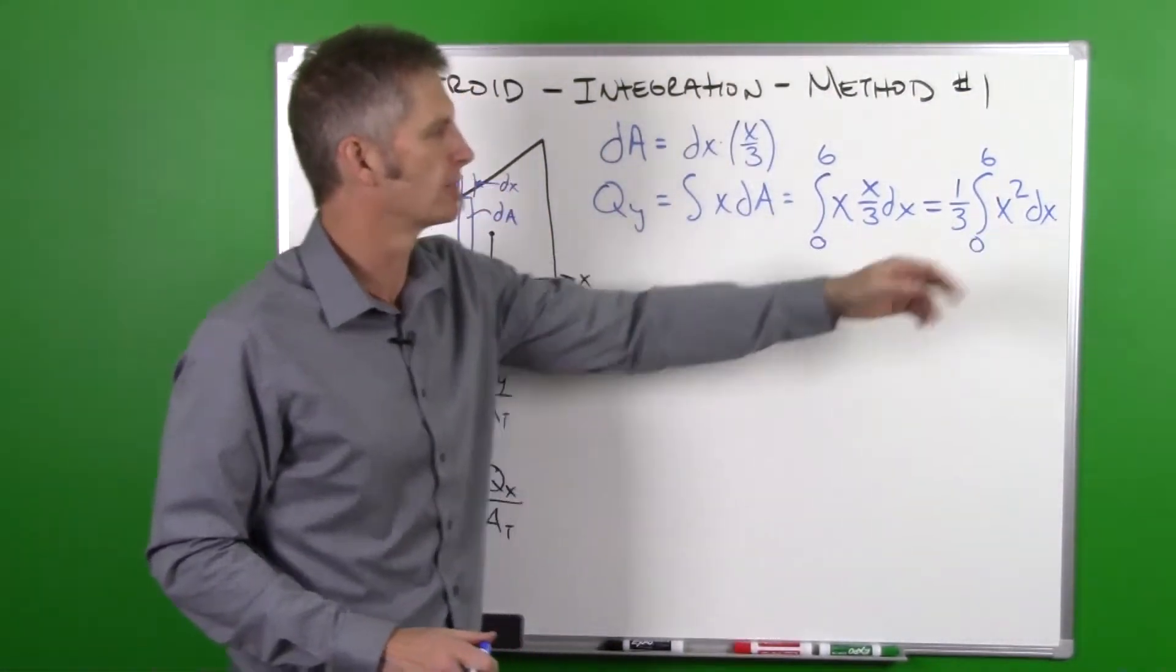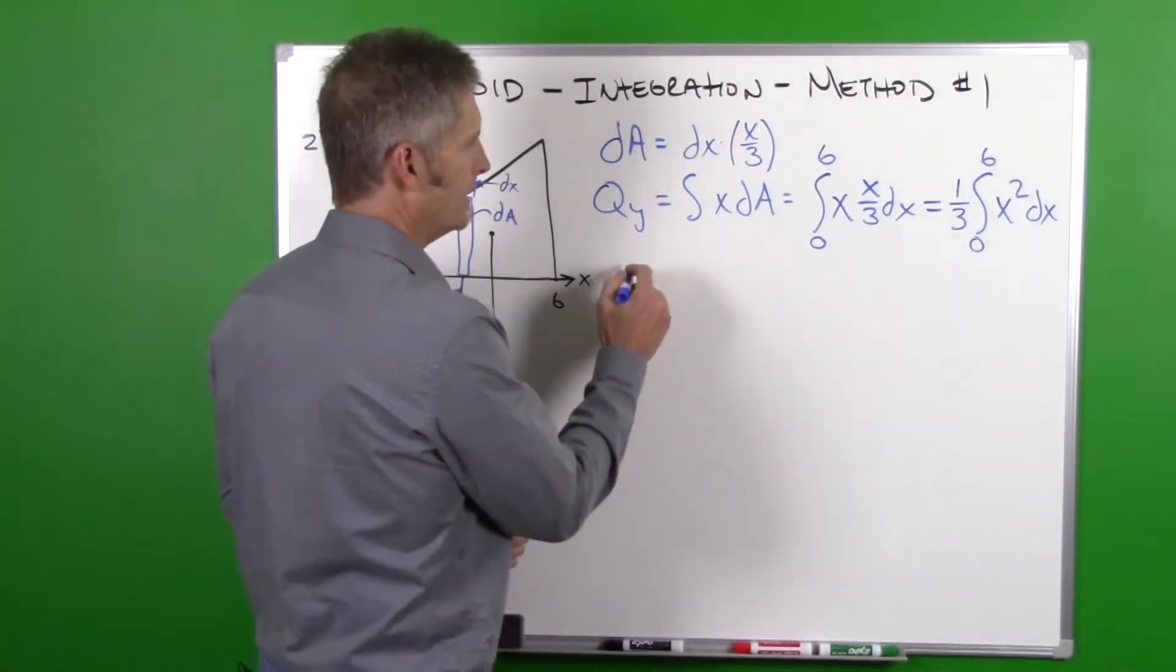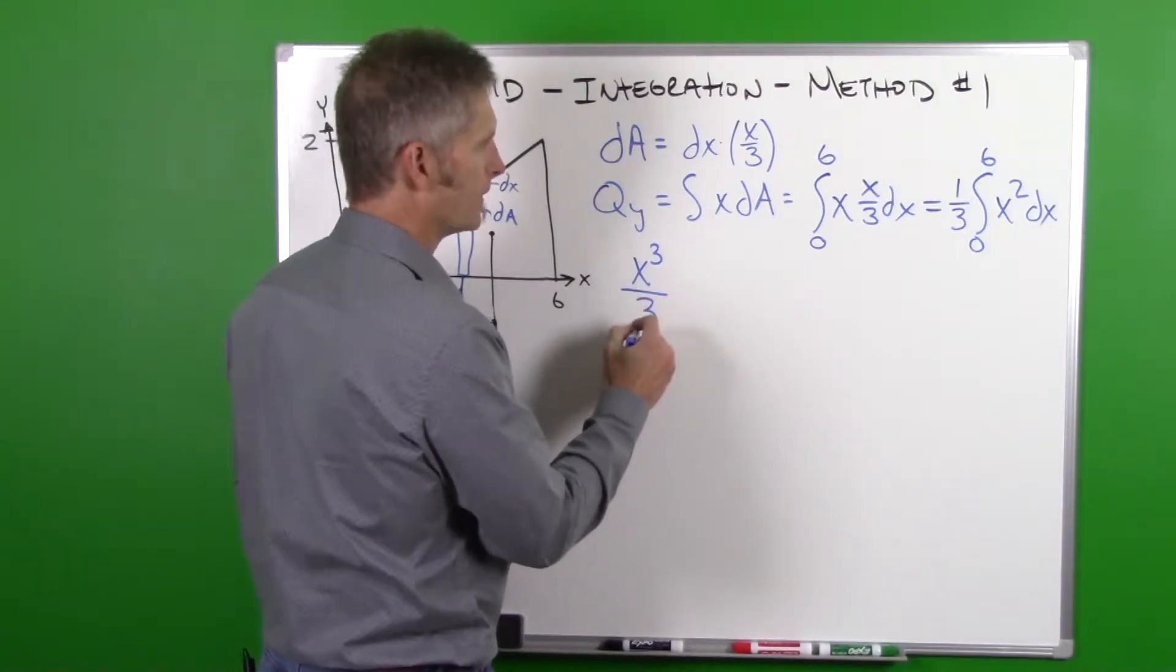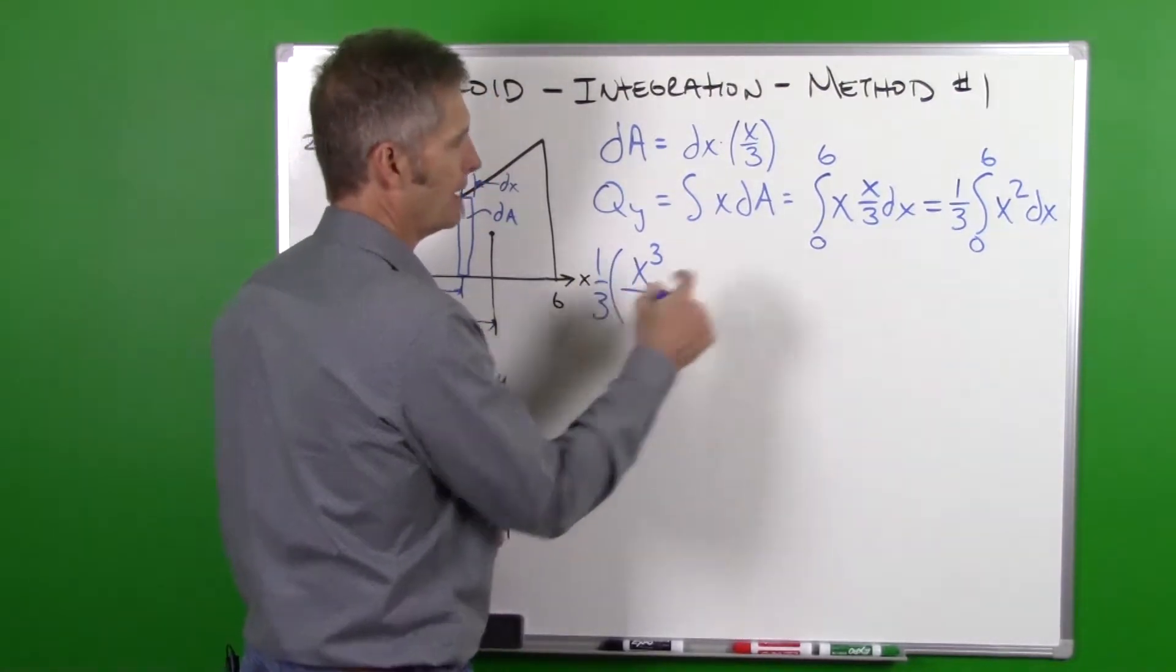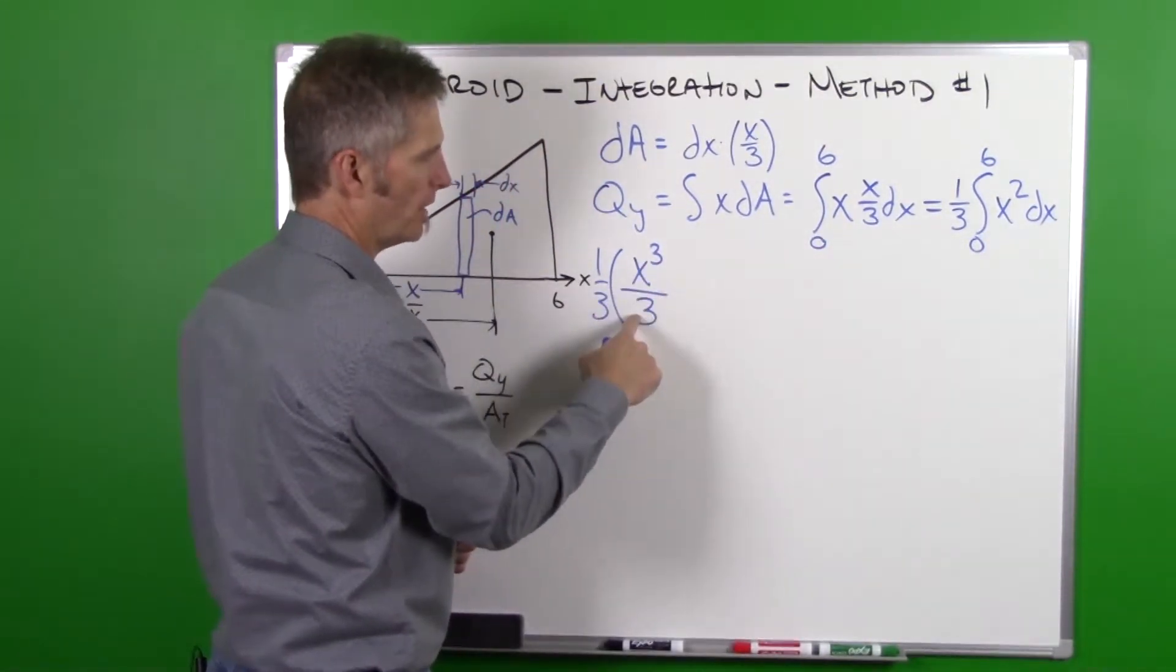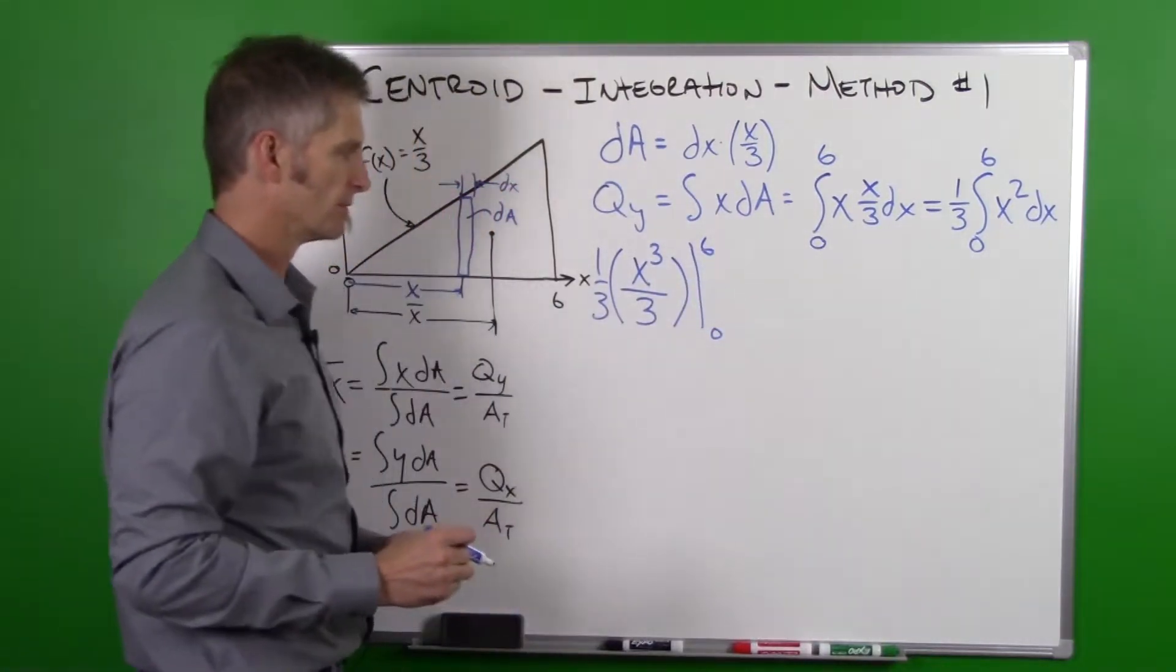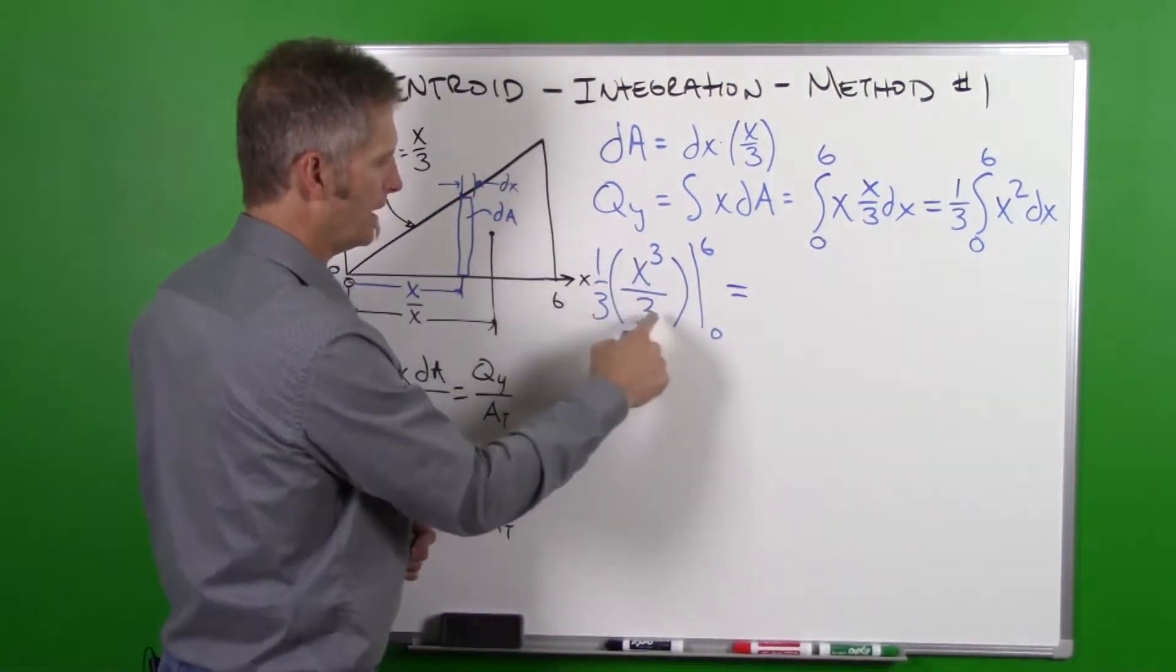So we just need to integrate x squared. What do we get when we integrate our x squared? We get x cubed over 3, and this is all multiplied by our 1/3 because that was out front. So when we integrate we get x cubed divided by 3, and we are going to evaluate that from 0 to 6. So when we evaluate this we really get x cubed divided by 9.